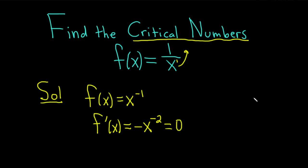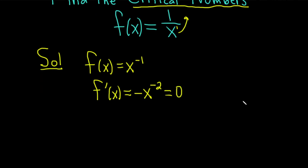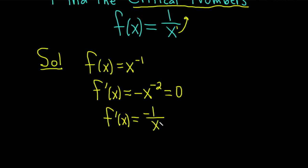Let's go ahead and rewrite this. So we have f prime of x, and that's going to be equal to negative 1 over x squared, and we're setting this equal to 0.